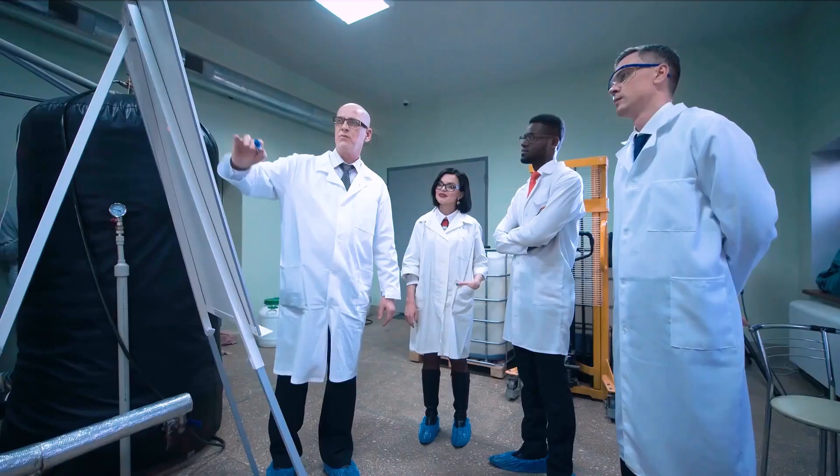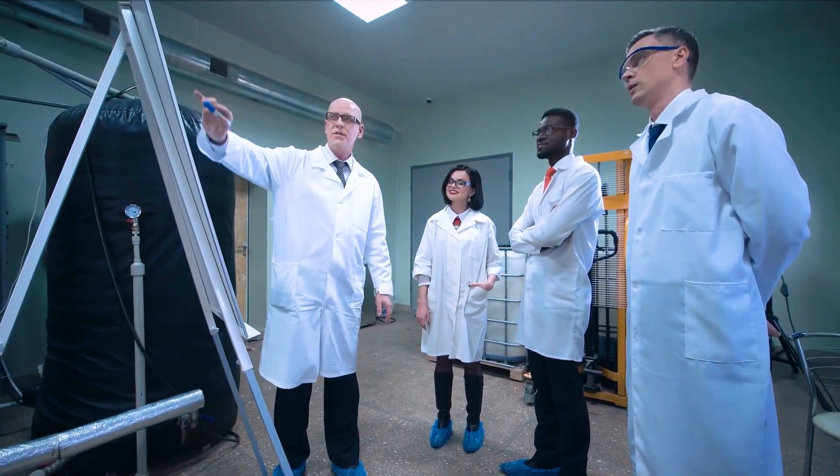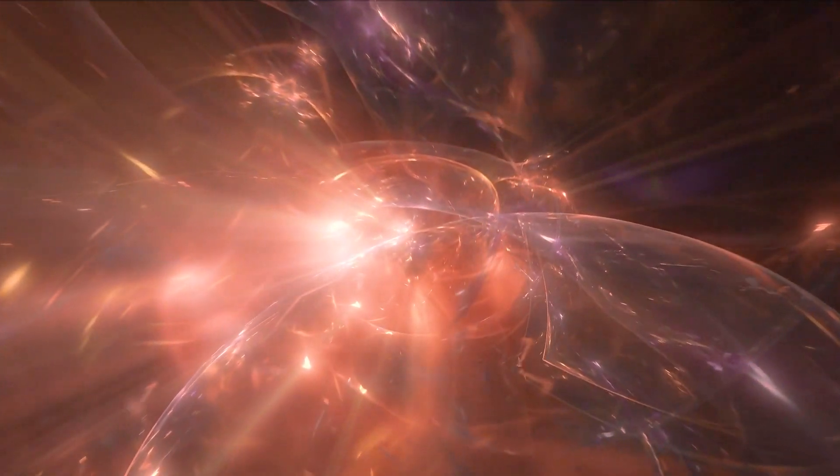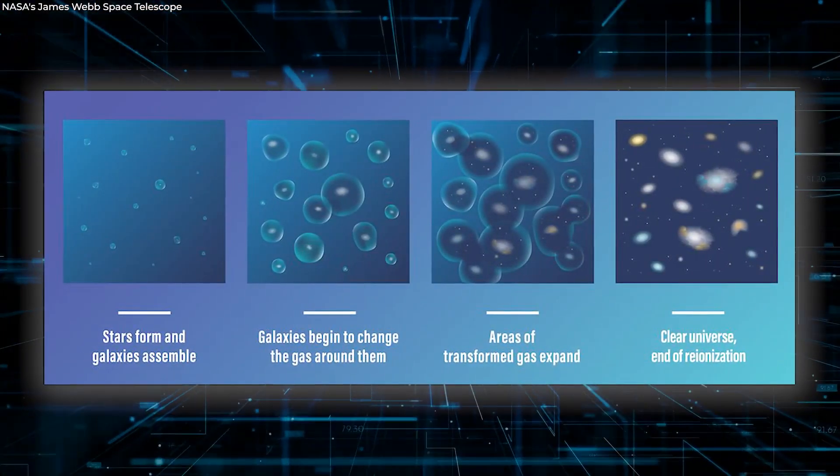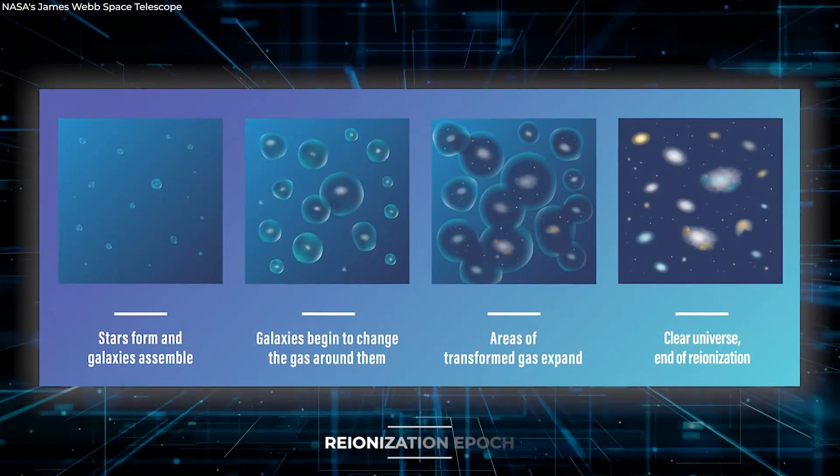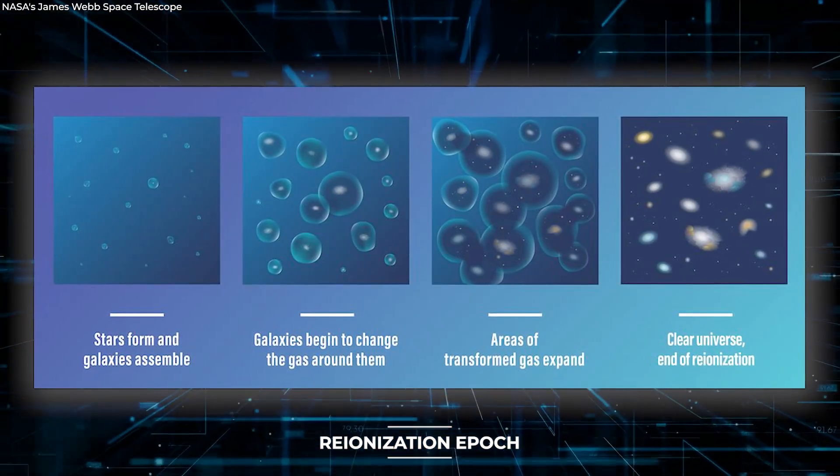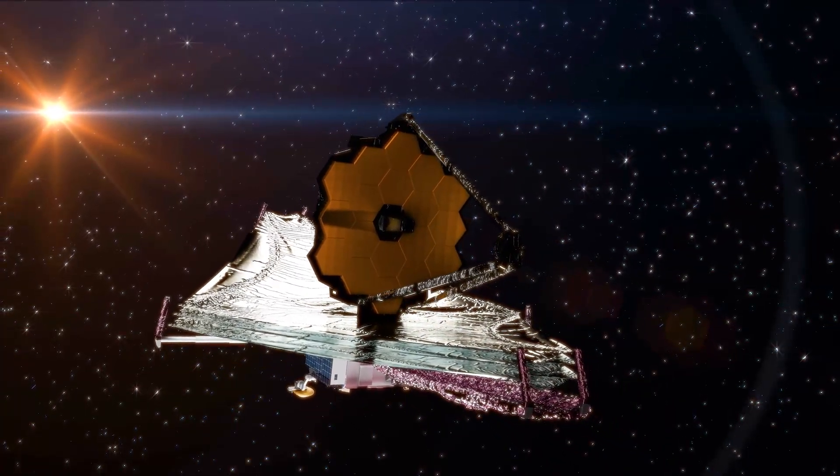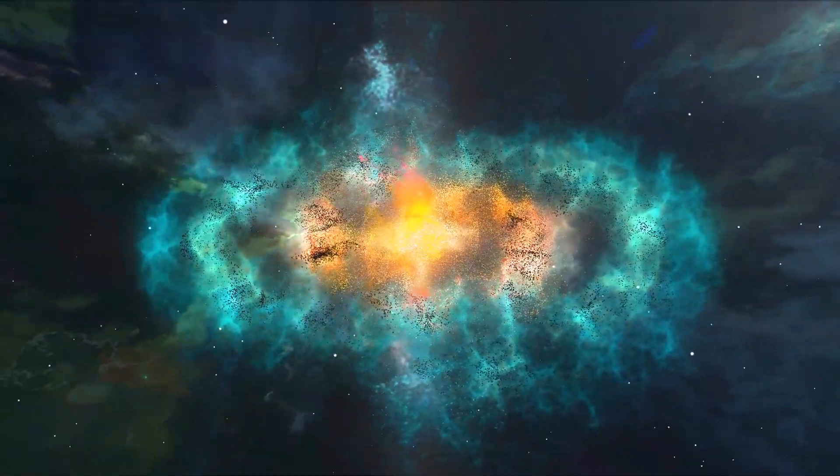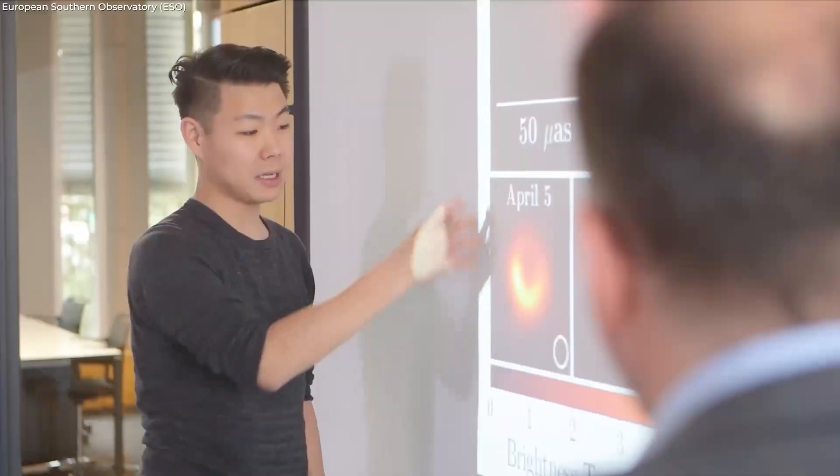For a very long time, scientists have looked for strong evidence to support these evolutionary changes. The latest findings essentially lift the veil on this reionization epoch's conclusion. Webb not only convincingly demonstrates that these transparent areas are there around galaxies, but scientists have also measured their size.